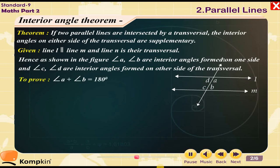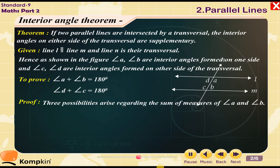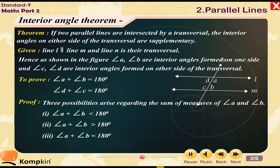To prove: angle A plus angle B is equal to 180 degrees; angle D plus angle C is equal to 180 degrees. Proof: Three possibilities arise regarding the sum of measures of angle A and angle B. 1. Angle A plus angle B is less than 180 degrees. 2. Angle A plus angle B is greater than 180 degrees. 3. Angle A plus angle B is equal to 180 degrees.